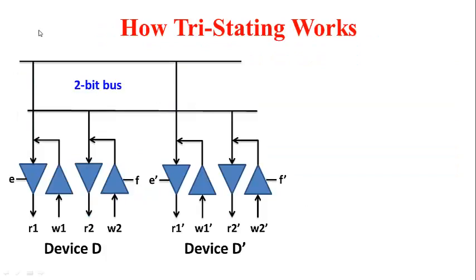Here is a diagram representing how tri-stating works. I have taken an example where we have a 2-bit bus. These are the two bus lines. We have a device D which can write or read these bits. These I have denoted as W1, R1 and W2, R2 for the two bits. We have here an enable line corresponding to reading of data from the bus that is E and I have an enable line corresponding to writing data onto the bus, denoted as F.